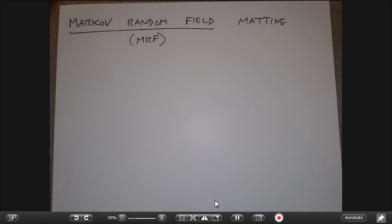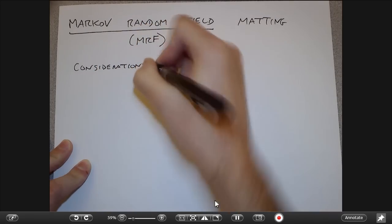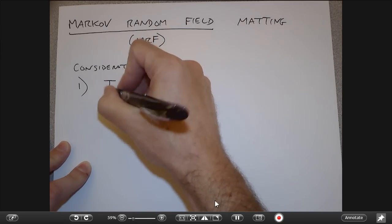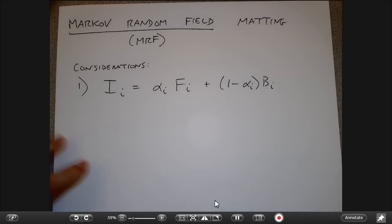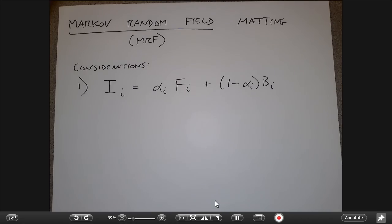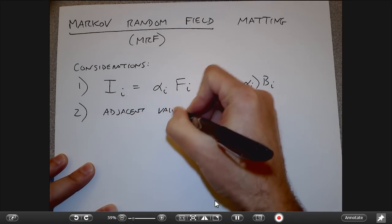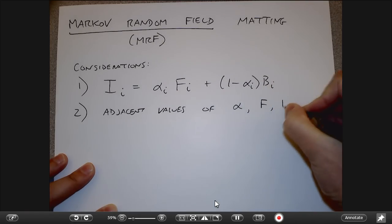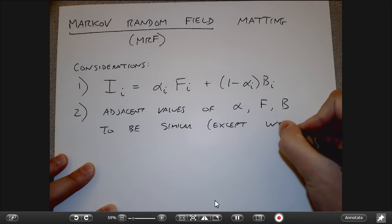Let's keep in mind what we want when we say we want to make a good matte. There are a couple of key considerations. One is that at each pixel, the image should be consistent with the matting equation. Since there are more unknowns than constraints, there are lots of possible mattes that still satisfy this equation. So the other thing is that we want adjacent values of alpha, F, and B to be similar except when there's an edge.